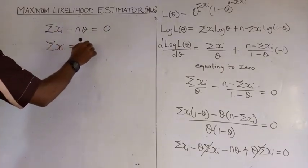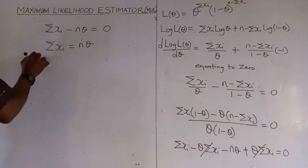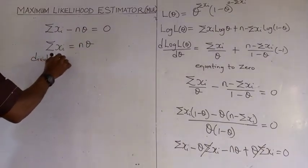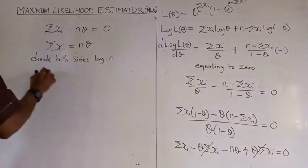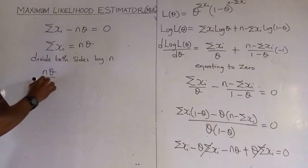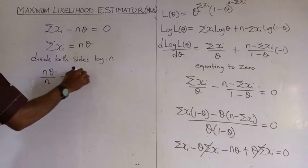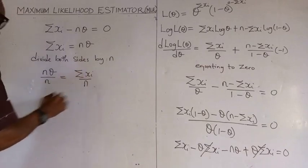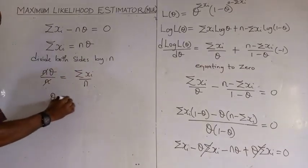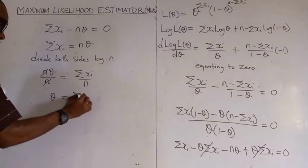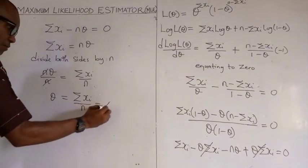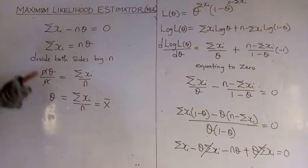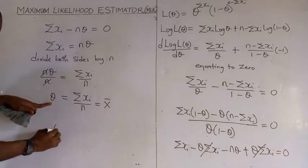From summation of xᵢ minus n times theta equals zero, it follows that summation of xᵢ equals n times theta. Dividing both sides by n, we get n times theta over n equals summation of xᵢ over n, and the n cancels, meaning theta equals summation of xᵢ all over n. Of course, we know that this is the sample mean. So the maximum likelihood estimator for theta for the Bernoulli distribution is equal to the sample mean, confirming it is indeed an estimate.